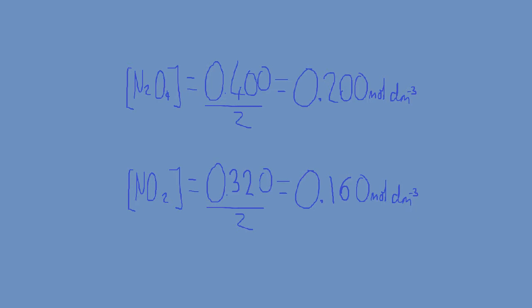Here I've simply divided the number of moles by the volume of the container to give the concentrations of N2O4 and NO2, which are 0.200 moles per decimetre cubed and 0.160 moles per decimetre cubed, respectively.